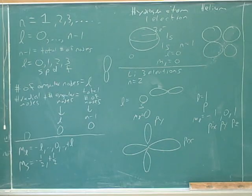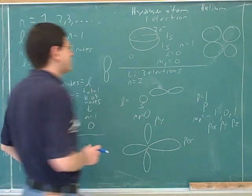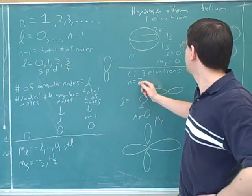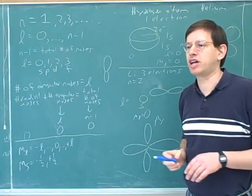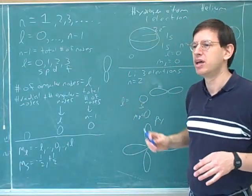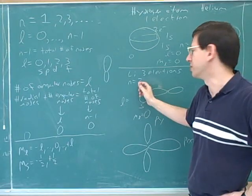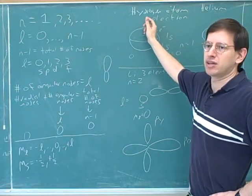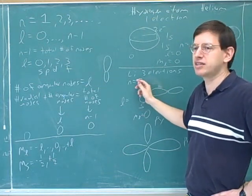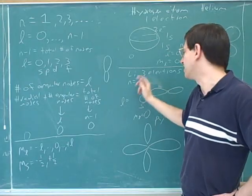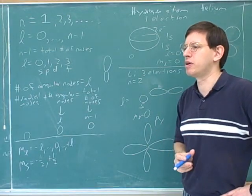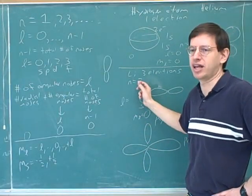We shouldn't say, does this atom have an orbital? That doesn't really make sense. Every atom, in a sense, has every orbital in the sense that every atom could potentially put electrons in any particular orbital. What you could say is, does a certain shell have an orbital? For example, does the second shell have P orbitals? Yes. But does the first shell have P orbitals? No. So it doesn't make any sense to talk about whether an atom has a certain orbital. But it does make sense to talk about whether a certain principal quantum number has certain subshells or certain orbitals.